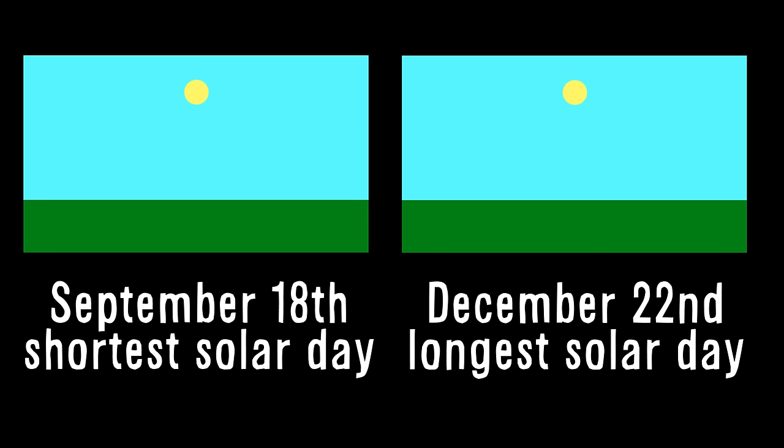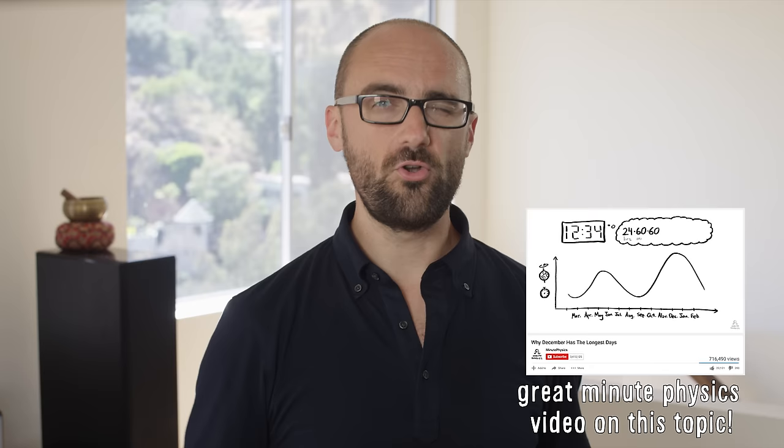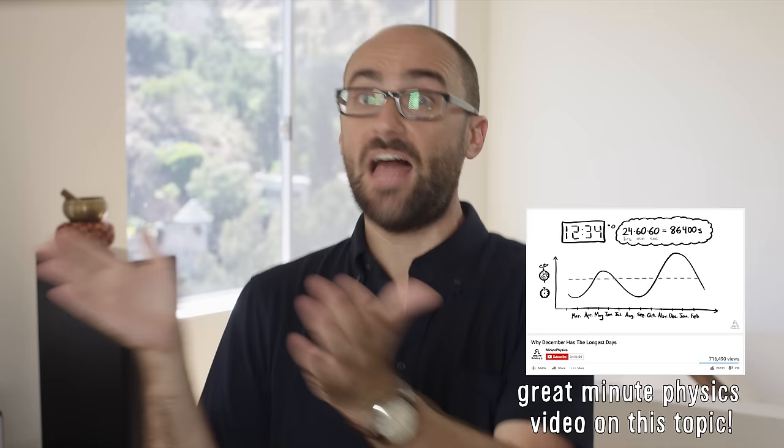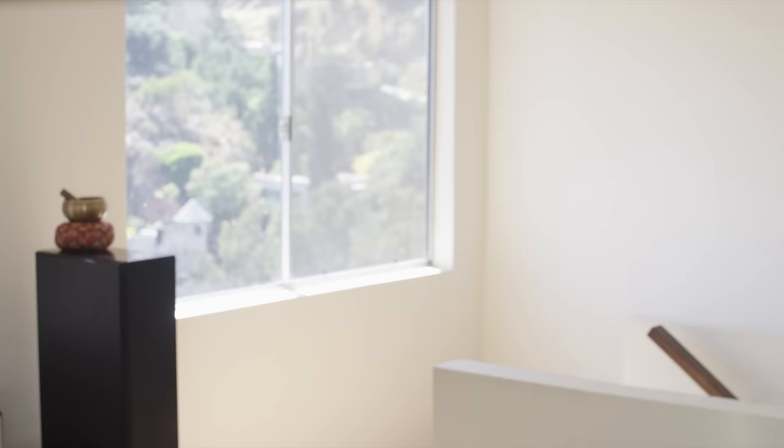Now, by coincidence, we are alive at a time when both of these phenomena lengthen and shorten days at roughly the same time, so they add up, making September 18th almost a minute shorter than the longest day of the year, December 22nd. For Northern Hemispherians, December has the shortest periods of daylight, but the whole solar day, from sunrise to sunrise, is for everyone on Earth the longest of the year on December 22nd. People in the North just spend most of it in darkness.